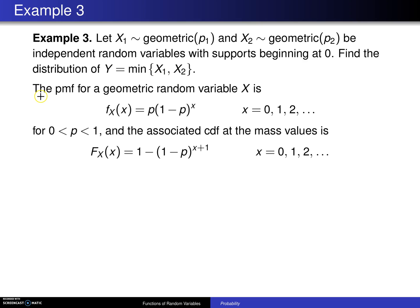To review from chapter 4, the probability mass function of a geometric random variable X is f_X(x) = p times (1 minus p) raised to the x power, for x = 0, 1, 2, etc., and for a parameter p between 0 and 1. The associated cumulative distribution function at its mass values is F_X(x) = 1 minus (1 minus p) to the x plus 1 power.